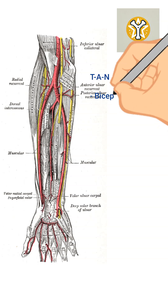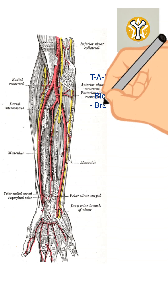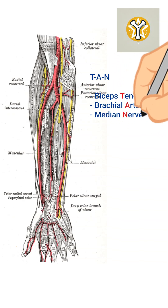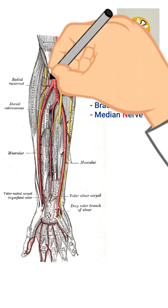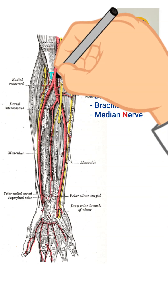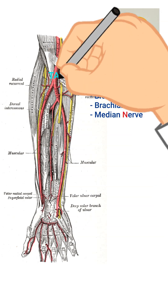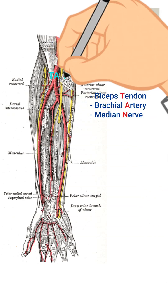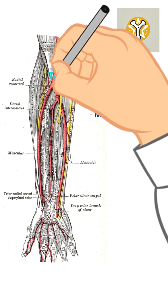The key contents from lateral to medial — remember TAN: the biceps brachii tendon laterally, the brachial artery in between, and then most medially the median nerve.